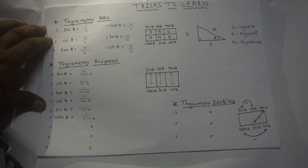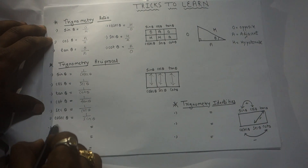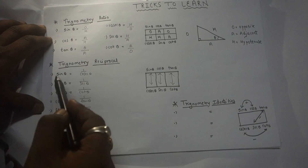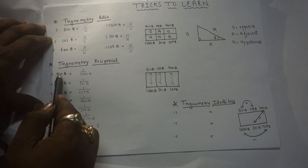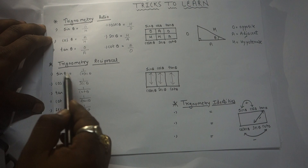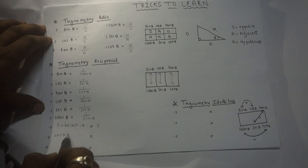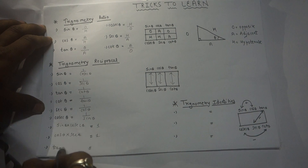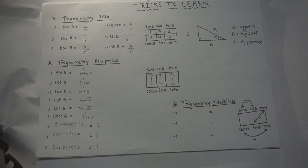Now focus — three more formulas. There is a relation between sin and cosec: sin theta into cosec theta equals one. In the same way, there is a relation between cos and sec: cos theta into sec theta equals one. And the last one, the relation between tan and cot: tan theta into cot theta equals one. I hope you understood trigonometric ratios as well as trigonometric reciprocals.